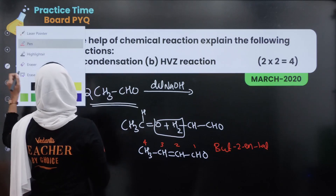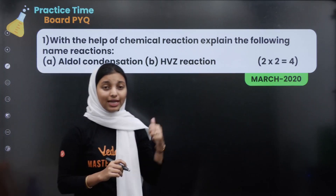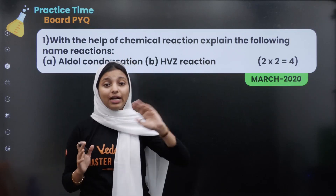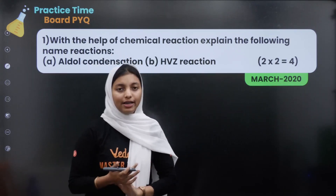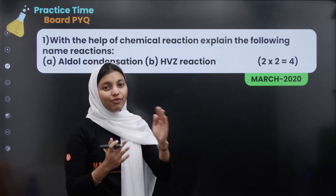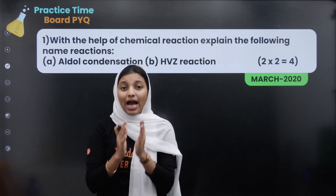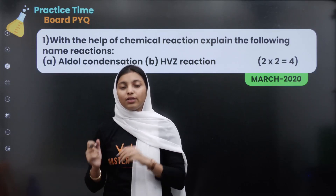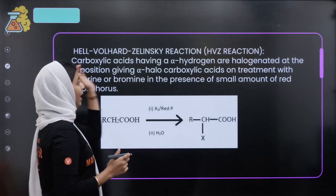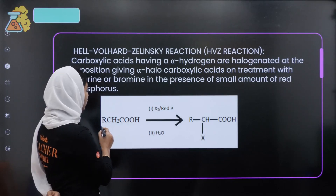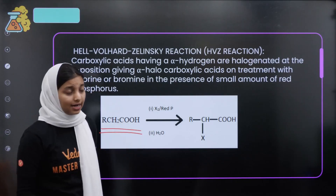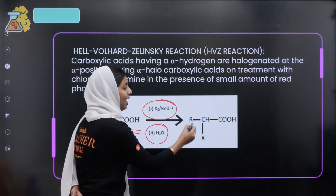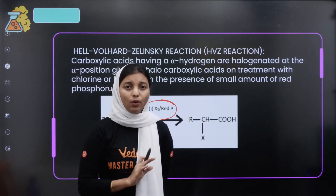That is the aldol condensation. Now, the next reaction is called the HBZ reaction — the Hell-Volhard-Zelinsky reaction. In this reaction, a carboxylic acid with an alpha hydrogen reacts in the presence of red phosphorus and halogen, followed by hydrolysis, to give an alpha-halo acid product.